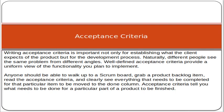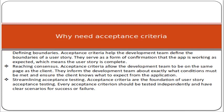Why do we need acceptance criteria? First, to define boundaries: acceptance criteria help the development team define the boundaries of a user story, serving as confirmation that the application is working as expected, which means the user story is completed. Second, reaching consensus: acceptance criteria allow the development team to be on the same page as the client, informing the team exactly what conditions must be met and showing the client what to expect. Third, streamlining acceptance testing: acceptance criteria are the foundation of user story acceptance testing — every acceptance criterion should be tested independently and have clear scenarios for success or failure.